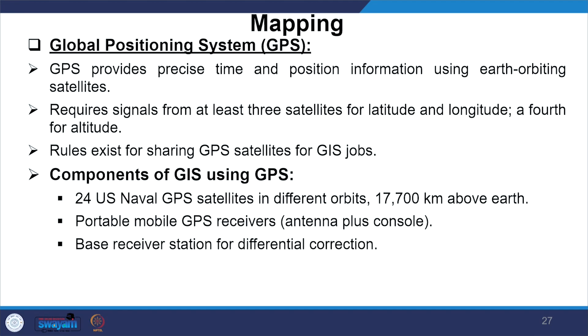Moving to mapping: when you have a large and widely distributed system, network data can be captured through a Global Positioning System (GPS). GPS provides precise time and position information using earth-orbiting satellites, requiring signals from at least 3 satellites for latitude and longitude, and a 4th for altitude. Rules exist for sharing GPS satellites for GIS jobs. Components for GIS using GPS include 24 US Naval GPS satellites in different orbits, 17,700 km above earth, portable mobile GPS receivers with antennas and consoles, and base receiver stations for corrections.